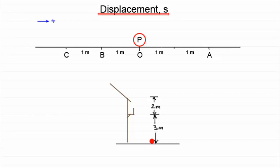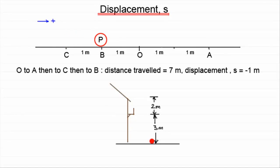So suppose the particle P travels to A, out to C and back to B. What would be the distance that it's travelled, and what would be the displacement? Well, the distance travelled would clearly be 1, 2, 3, 4, 5, 6, 7 meters, and the displacement would be minus 1 meter.